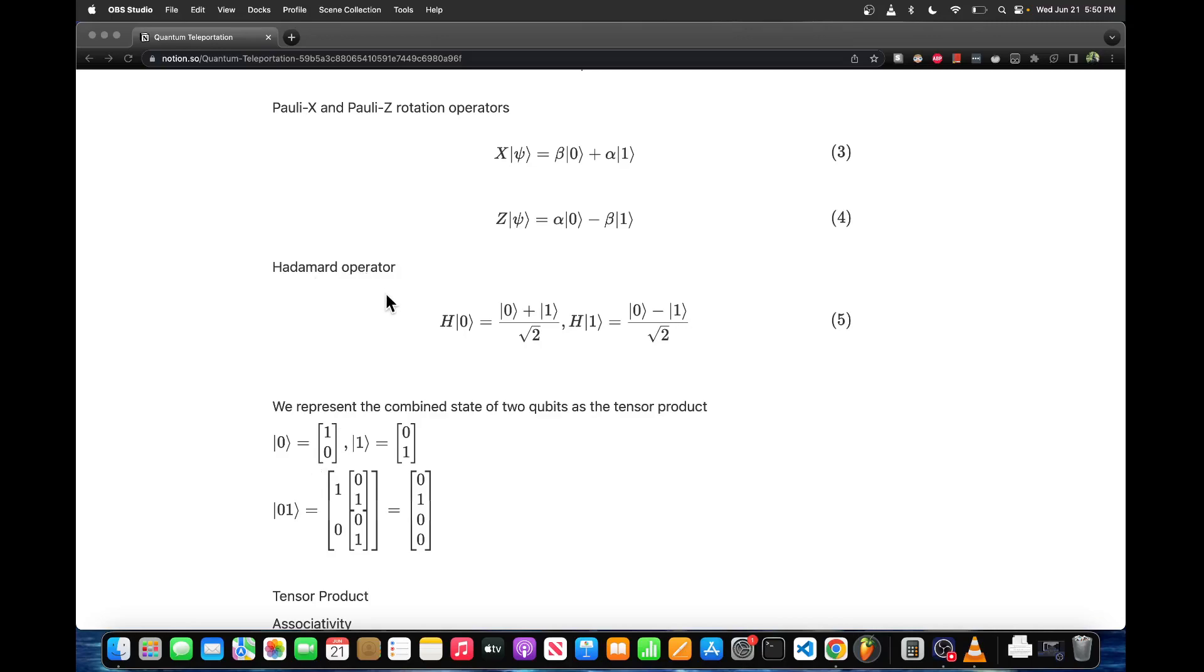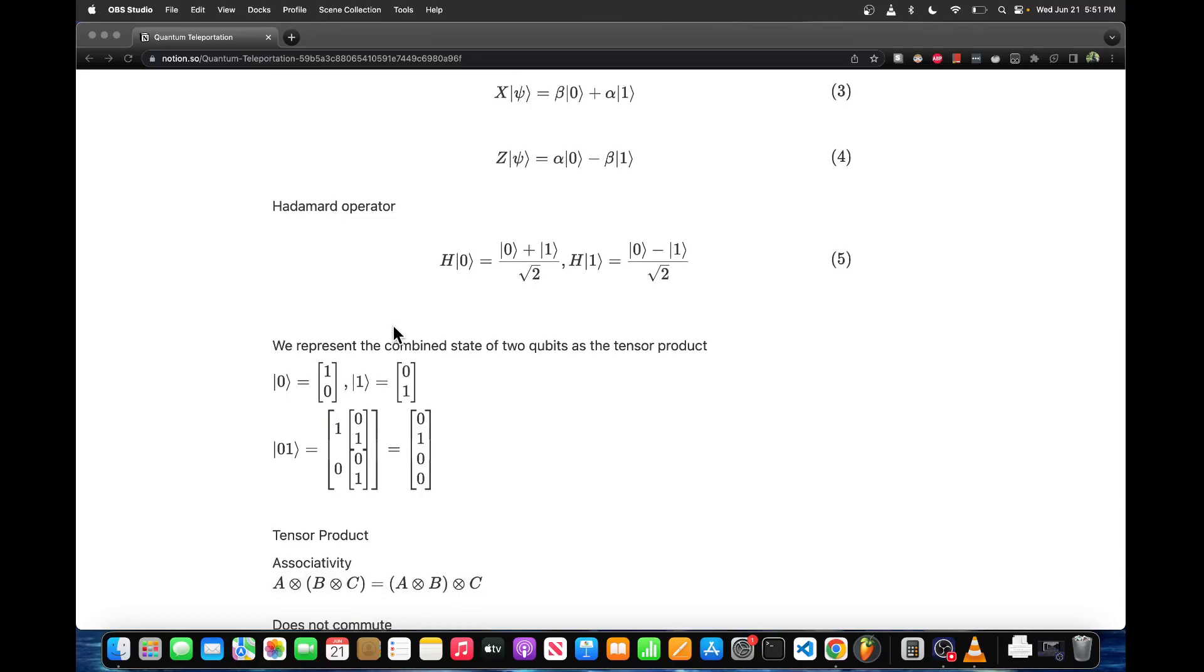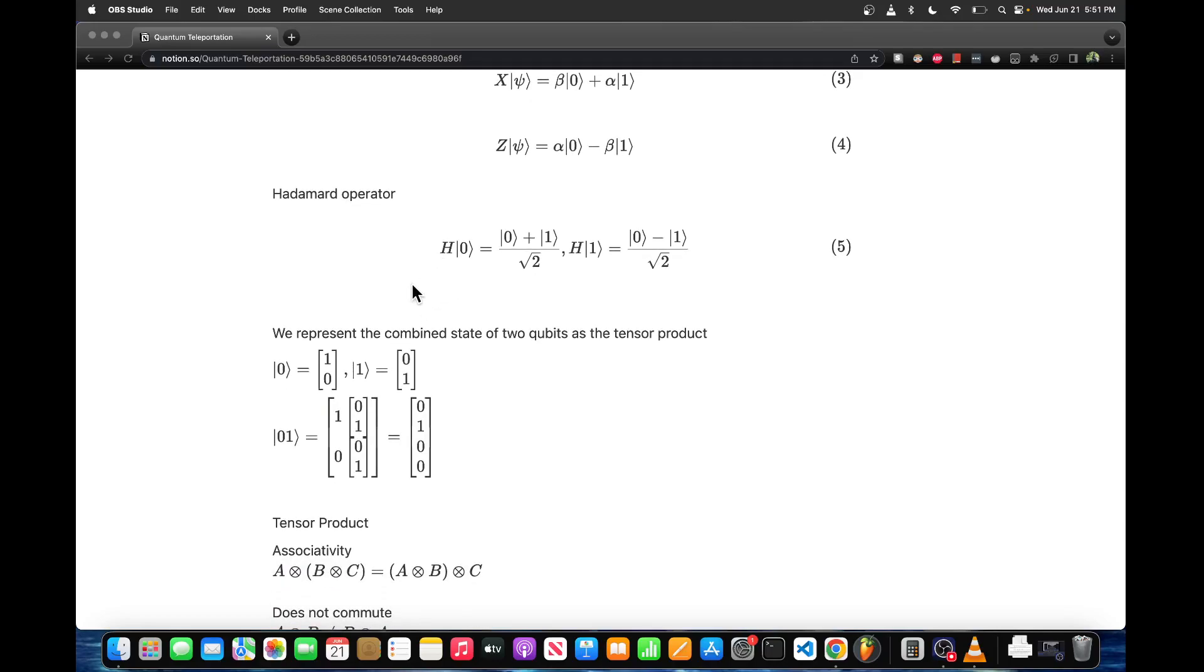Next is the Hadamard operator. The Hadamard operator acting on the zero base state produces a superposition of zero and one states with equal probability of being observed. The Hadamard operator acting on the one basis state produces a similar output except that the one base state has a negative sign in front of it. It's also good to know that the Hadamard operator is its own inverse, so if you apply it twice you get the original state vector back.